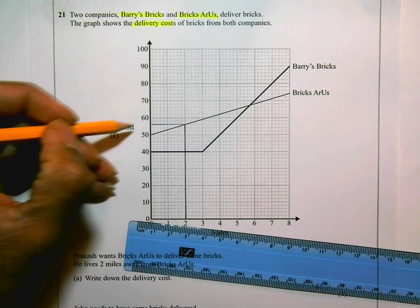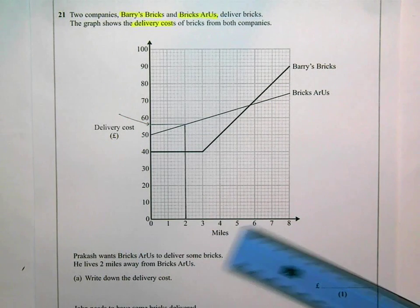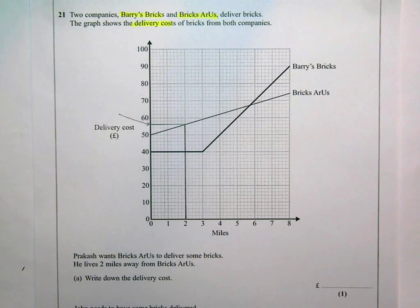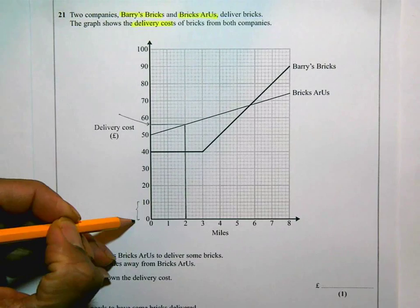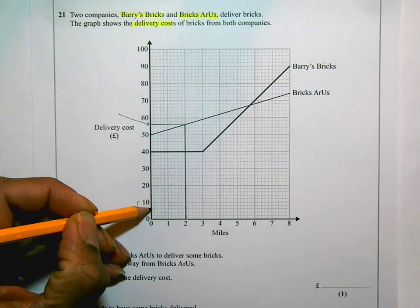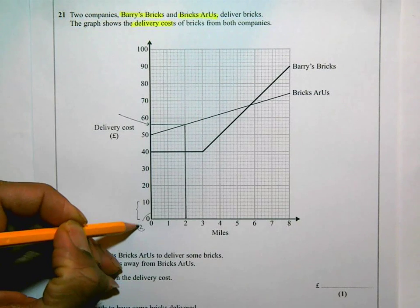And I need to read off this value here. Now, it's really important that I understand the scale in questions like this. If I look at this here, 0 to 10, there's 1, 2, 3, 4, 5 squares in there. So every single square is going to stand for 2 pounds.